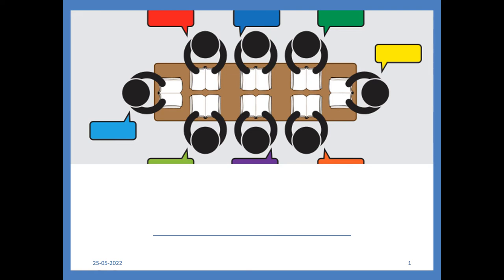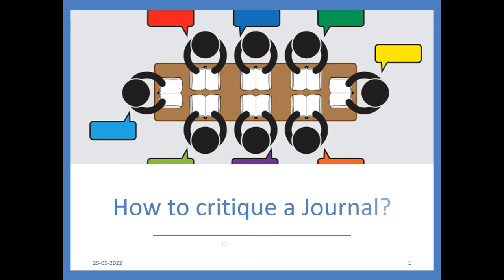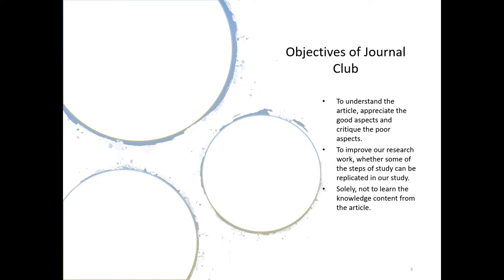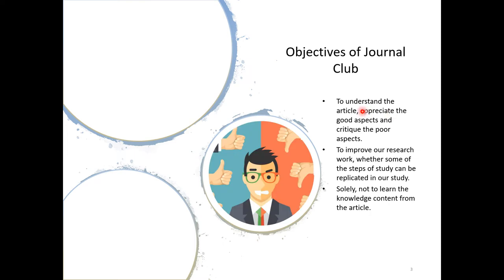Hello friends, in this video we are going to discuss how to critique a journal for your journal club presentations. For any journal club, the objectives are to understand the article, appreciate the good aspects of the article, and critique the poor aspects of the article. That is the first objective.